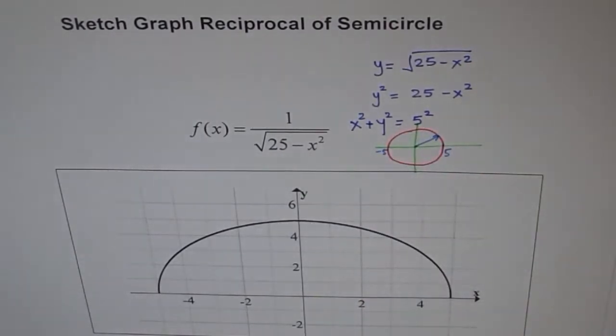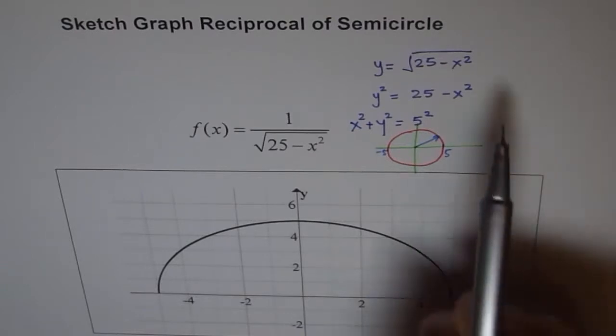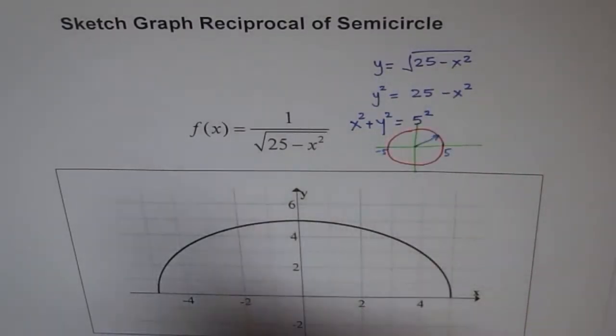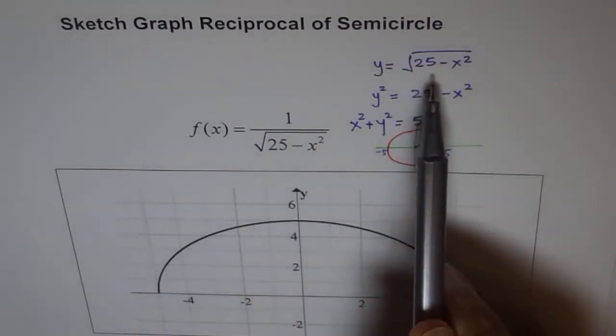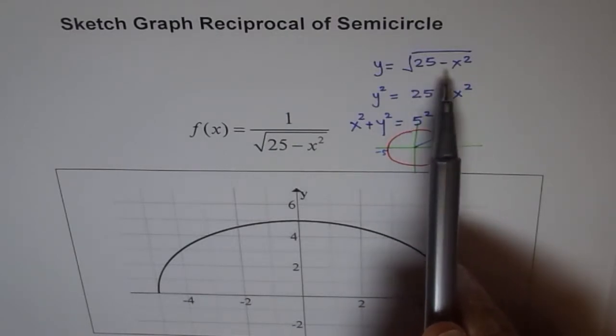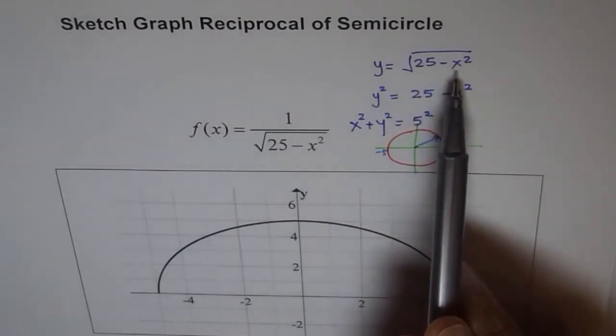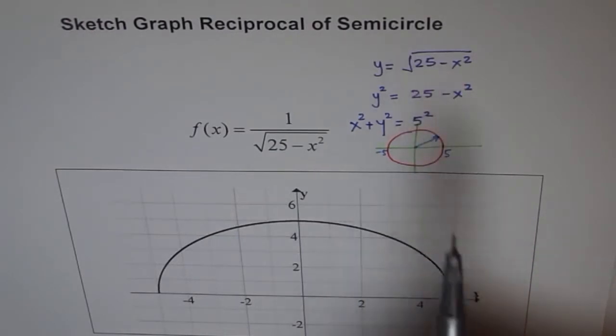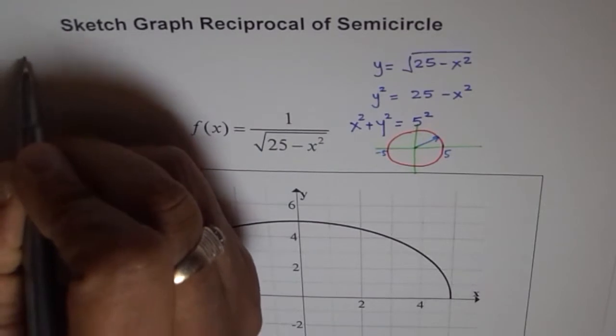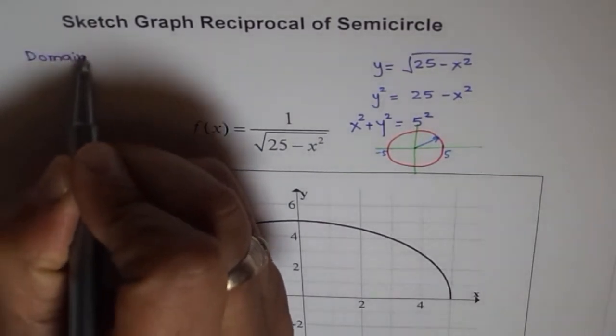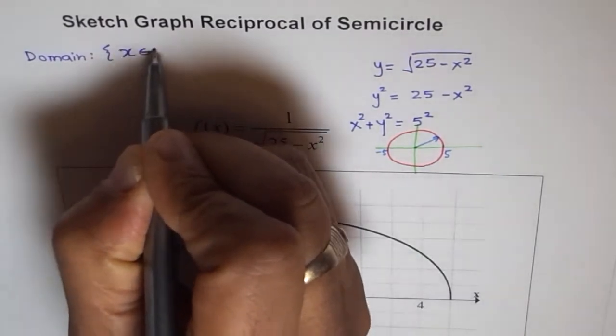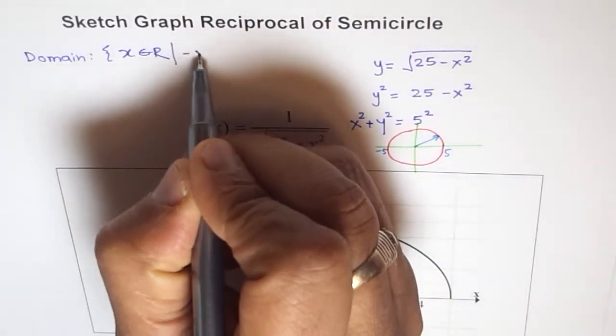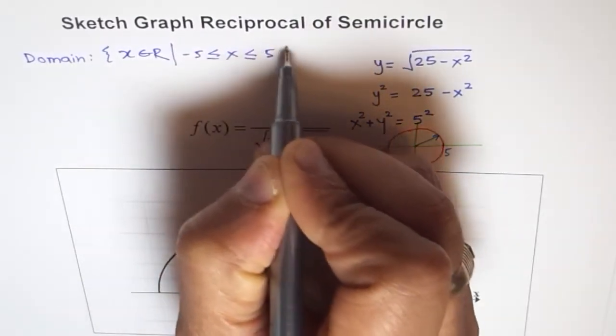That is what this function is. I am saying function because I started my problem with square root of 25 minus x square. Now if I have that as my problem, then what do you think is the domain? The domain of x has to be within plus minus 5. If it is beyond plus minus 5, then this is not valid. So the domain is x belongs to real numbers where x is between plus and minus 5.